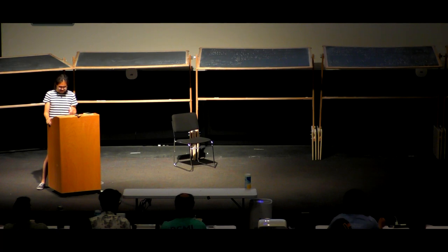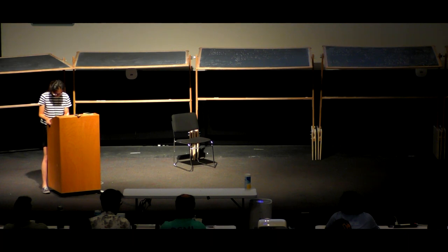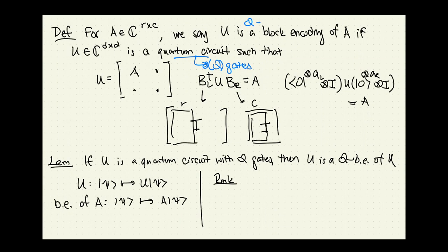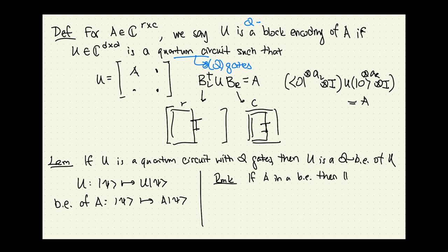There are restrictions on A. One simple observation is that if A is in a block encoding, then the spectral norm of A must be bounded by one. This is because U has spectral norm one, and if A is a submatrix of U, then A must be bounded by one in spectral norm. Apart from that, I don't think there are other restrictions.